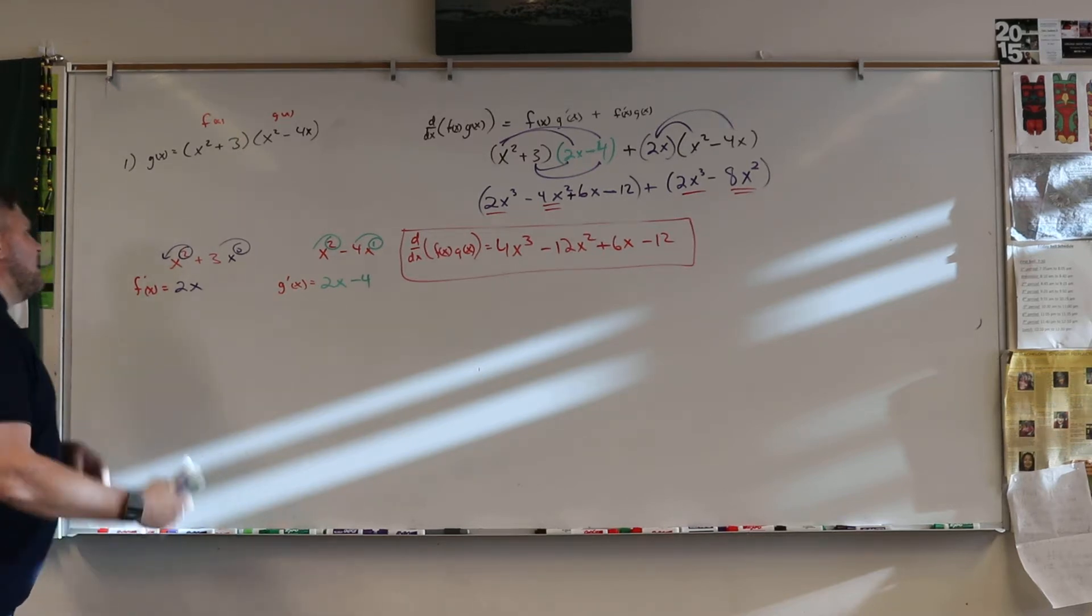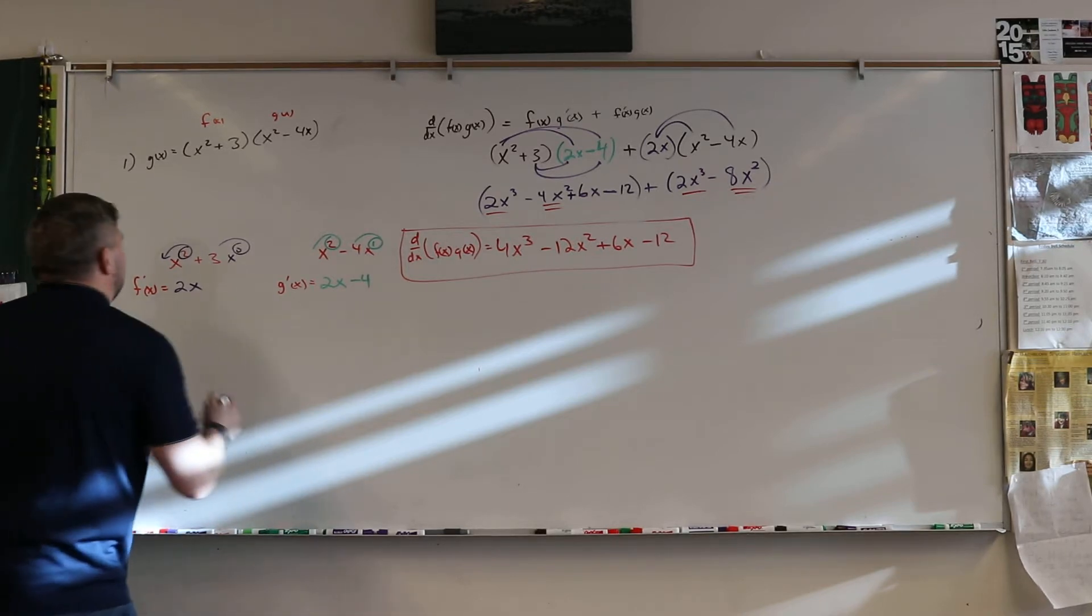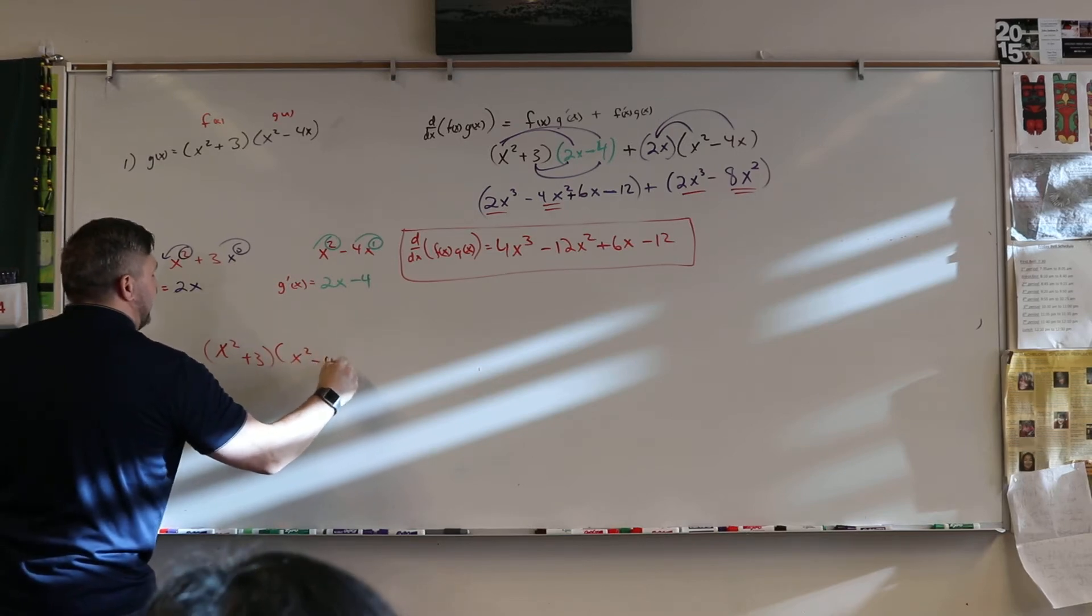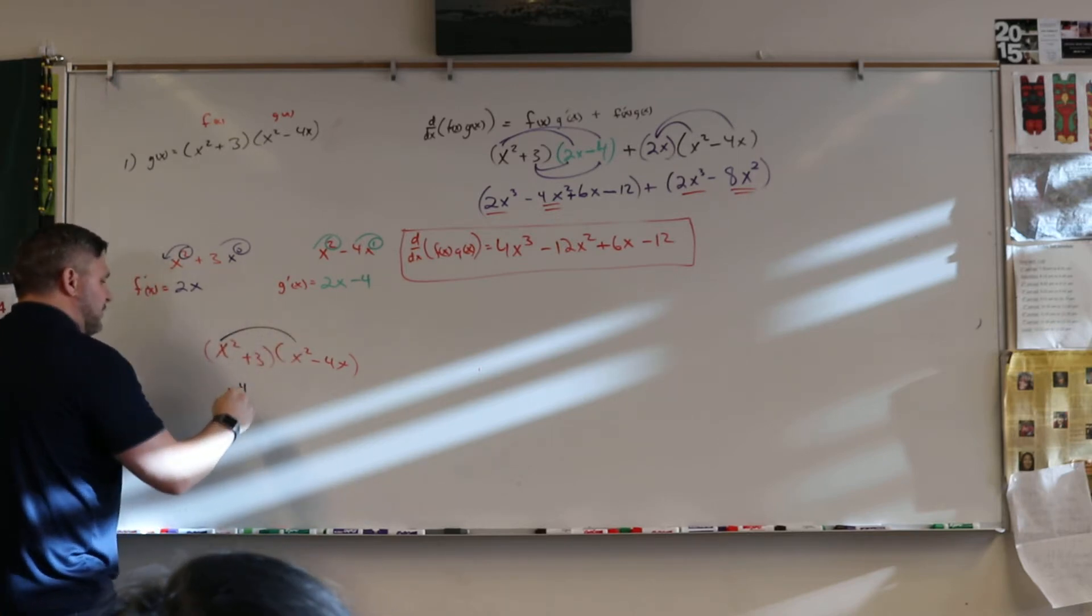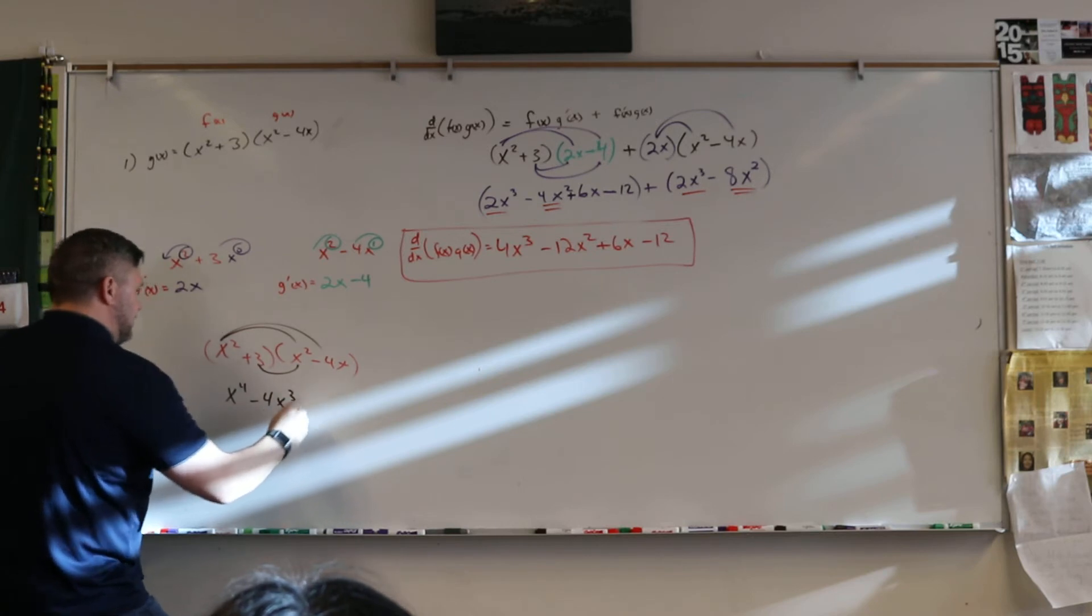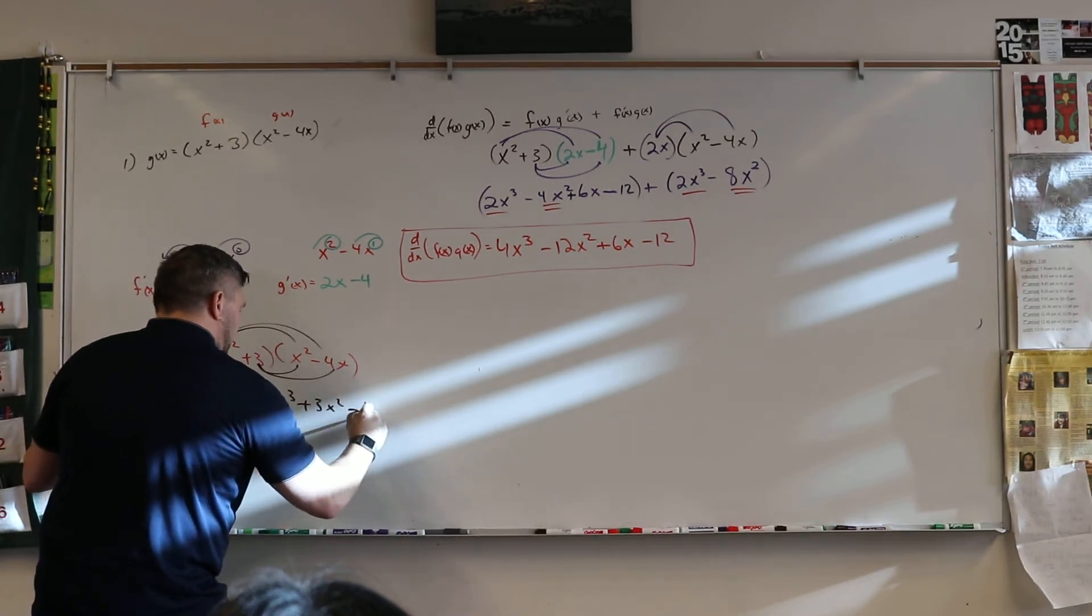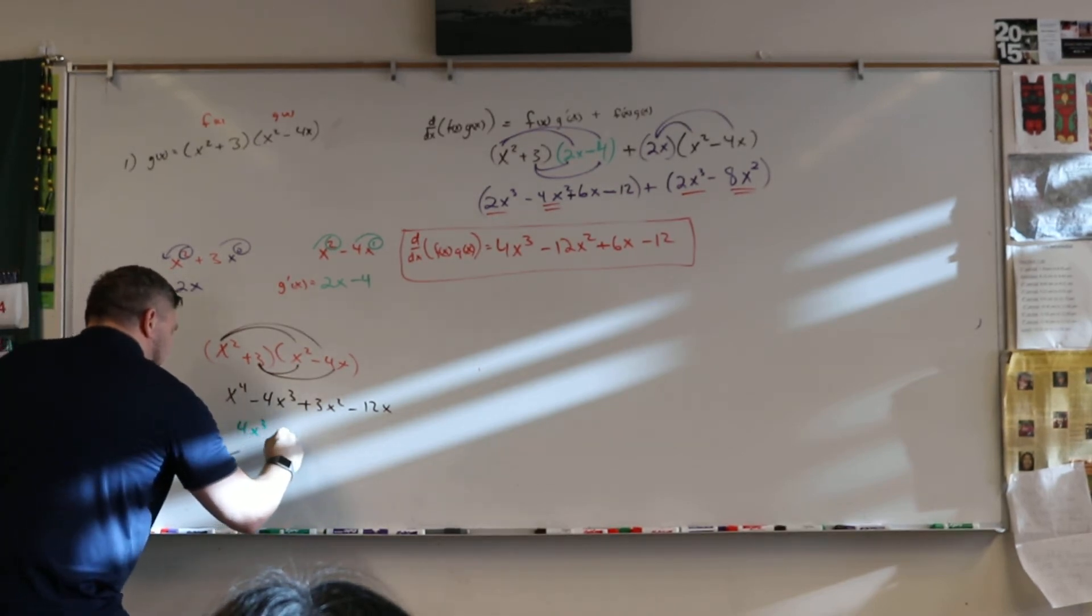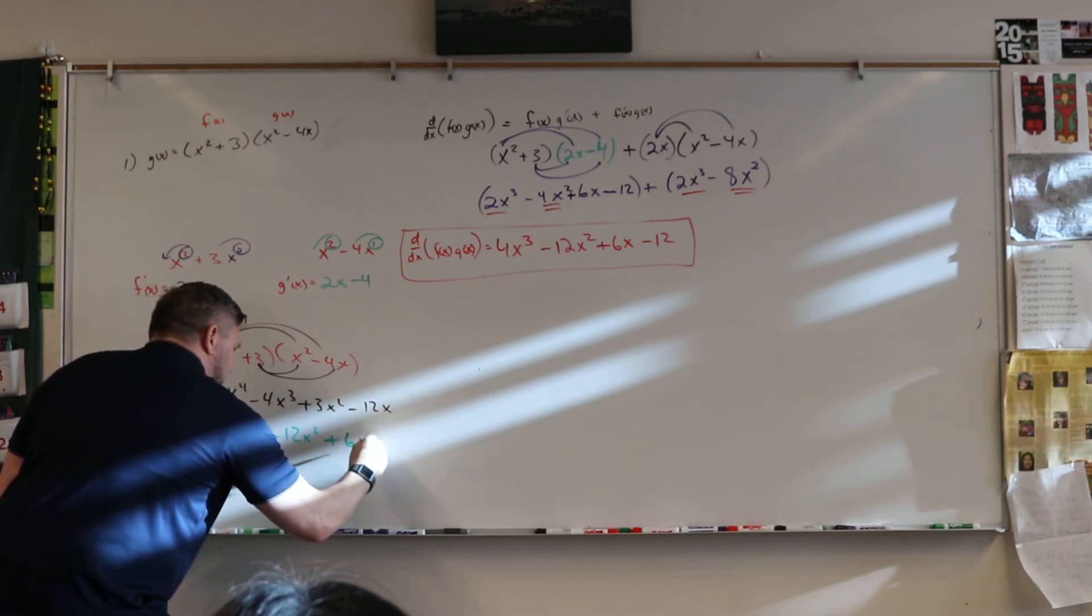Now, I don't know what's easier. I was kind of thinking, honestly, as a side note, I was thinking this. I was thinking, hey, let's take the x squared plus the 3 times the x squared minus the 4x, right? And then do this, which is x to the 4th, this, which is minus 4x cubed, this, which is plus 3x squared, and this, which is minus 12x. And then take the derivative. That would be 4x cubed minus 12x squared plus 6x minus 12. Is that the same?